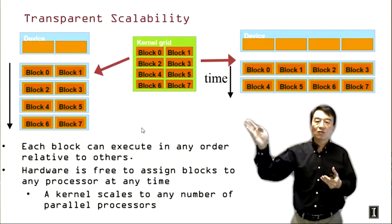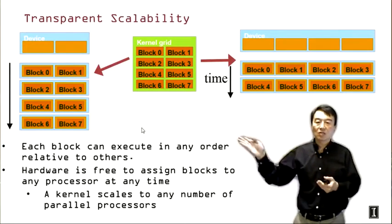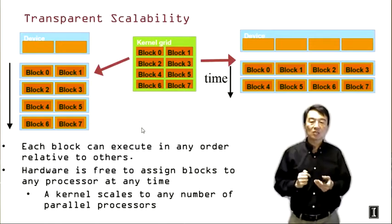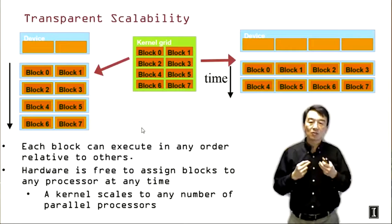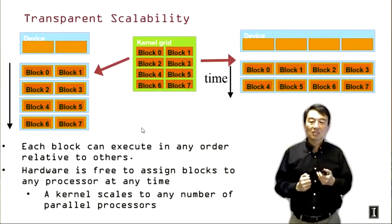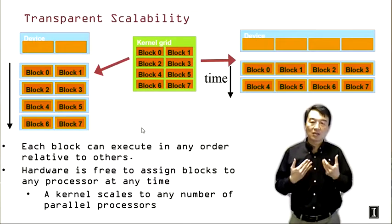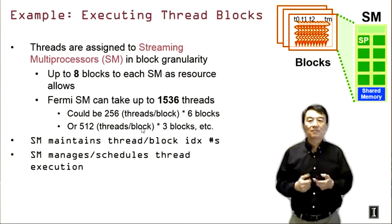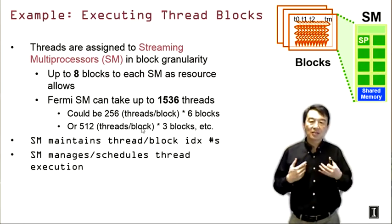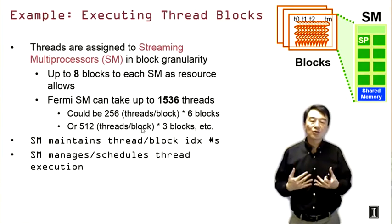This goes back to the introductory lecture where we talked about scalability of the same program for different types of hardware. With fewer or more execution resources, the same program should be able to make full use of both types of hardware devices. This is a very important feature for reducing software engineering effort. Now let's look at how we actually assign thread blocks to execution resources.